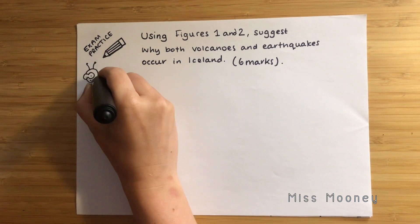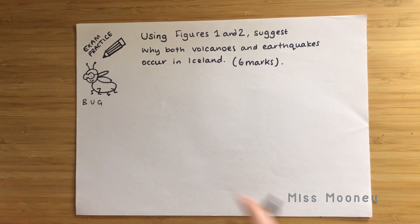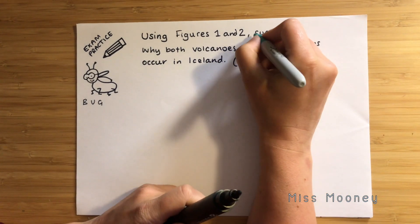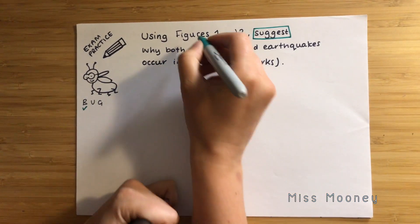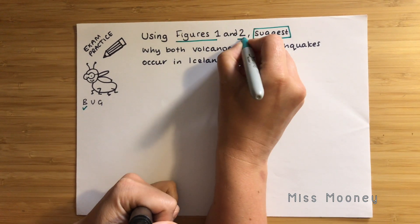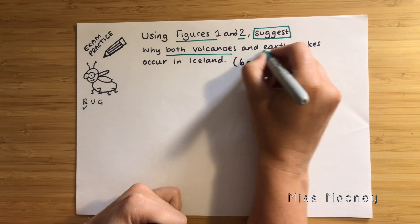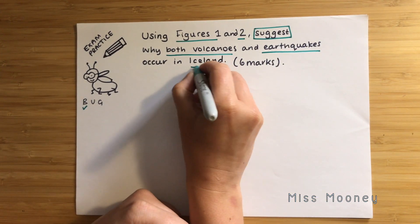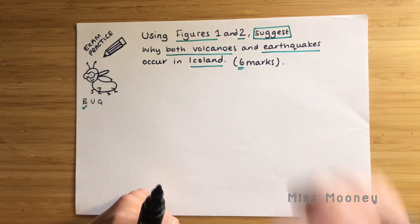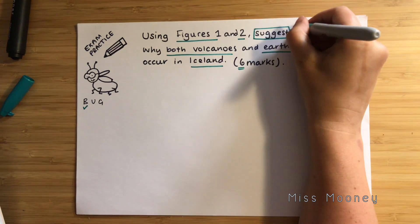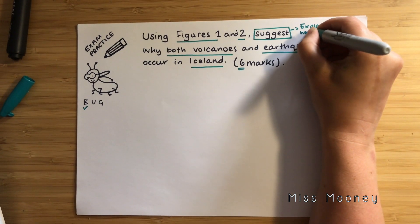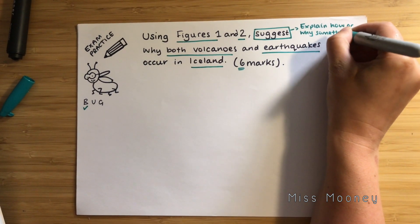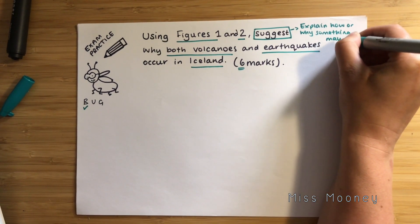As with all exam questions, the first thing you need to always do is BUG the question. The B stands for 'box the command word' — the command word for this question is 'suggest.' The U means underline the key and important information you need for your answer. The G means go back and re-read. So 'suggest' is very similar to an 'explain' command word.